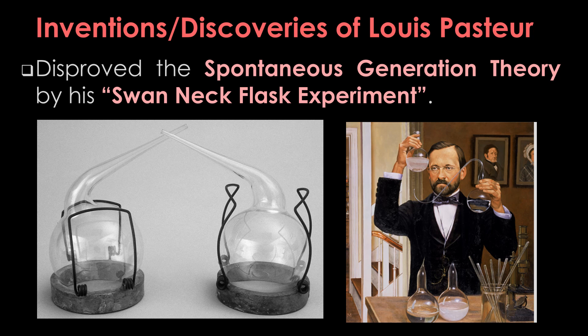Louis Pasteur was the first person who disproved the Spontaneous Generation Theory by his Swan-neck Flask experiment. Spontaneous Generation Theory was first proposed by Aristotle, a Greek philosopher and father of biology, around 350 BC. Spontaneous Generation, or Abiogenesis, refers to the idea that living organisms can arise from non-living things — for example, mice from grains, beetles from dust, worms and frogs from mud, and maggots from rotten meat.